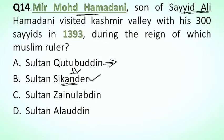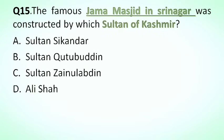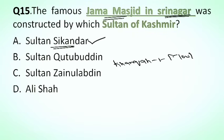Next question is: the famous Jama Masjid in Srinagar was constructed by which Sultan of Kashmir? Options: A. Sultan Sikandar, B. Sultan Qutbuddin, C. Sultan Zainul Abidin, D. Alisha. The correct answer is option A, Sultan Sikandar. He laid the foundation of the Jama Masjid in Srinagar. He also constructed the Khanqah-e-Moula in Srinagar, which is located on the banks of the Jhelum River.